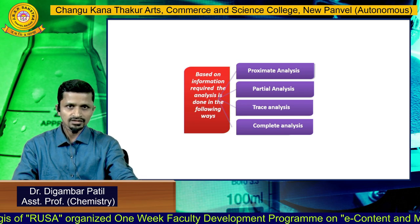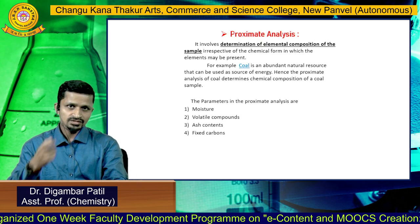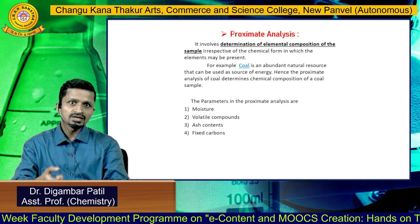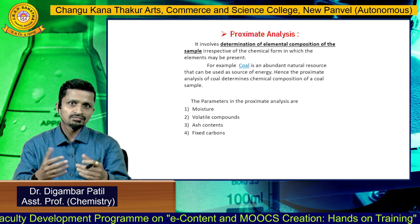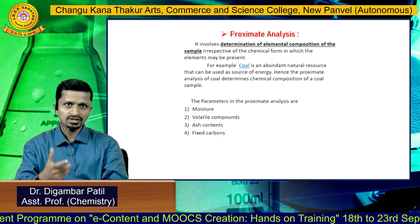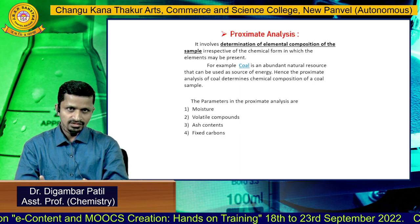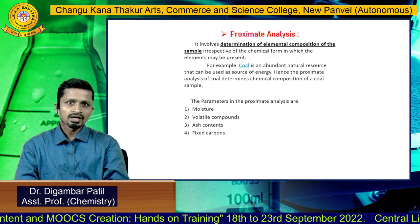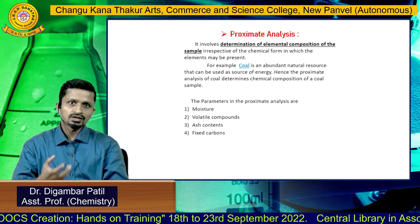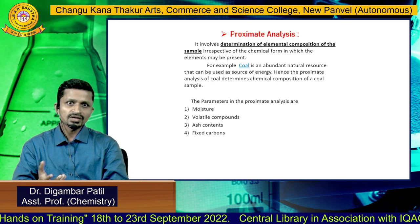What is proximate analysis? It involves the determination of elemental composition of a sample. For example, consider coal — a natural source of energy. When we perform proximate analysis of coal, we determine its chemical composition.